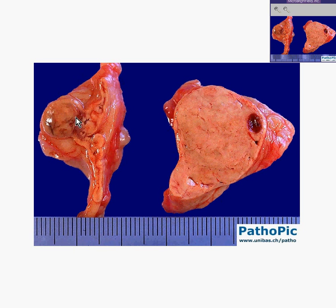But look — there are areas of thickening. Here's a nodular thickening area, here's another nodular thickening area, there's a smaller area of nodular thickening, and here's a very large area of nodular thickening. It's almost as though the adrenal cortex was hyperplastic in a nodular fashion, and that is the name of this case: nodular hyperplasia of the adrenal.